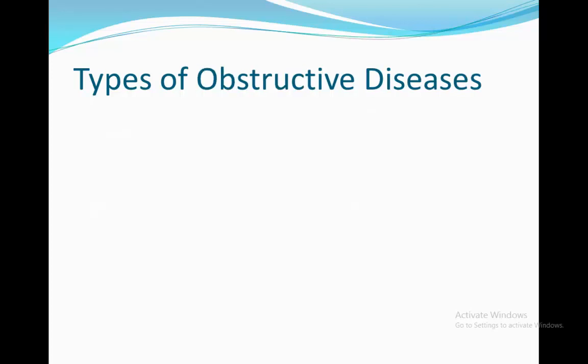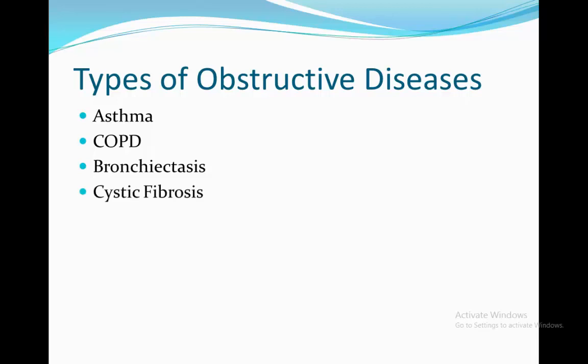In obstructive disease, there is a problem with expiration due to a mechanical obstruction. In asthma, the problem isn't with the lung itself, but with the bronchi, seeing as it's constricted. In COPD, there's excessive mucus secretion which forms a plug in the small airways. In bronchiectasis, the small airways are dilated and inflamed, resulting in infiltrate obstructing the airflow. In cystic fibrosis, it usually occurs in paediatrics, and the mucus secretions are thicker than normal, forming a plug.